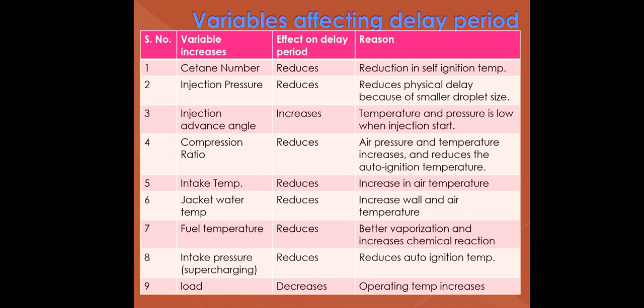An increase in injection advance angle also increases the delay period because temperature and pressure are low when injection starts. If the compression ratio increases, it reduces the delay period because a high compression ratio increases the pressure and temperature of air, which reduces the auto-ignition temperature of the mixture.